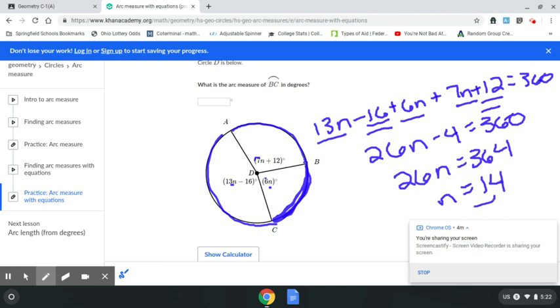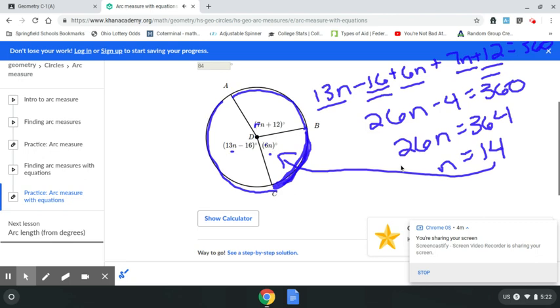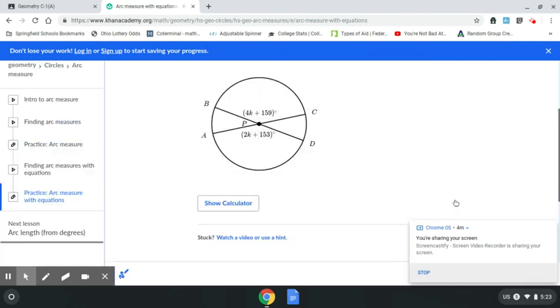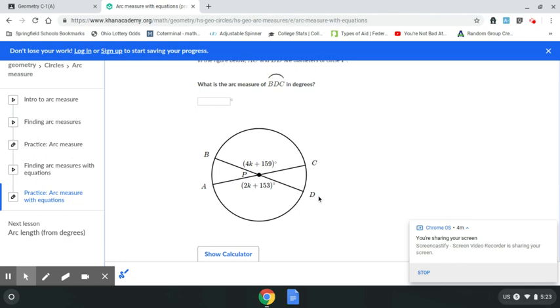They want me to find BC. So I take that 14 and plug it into here. 6 times 14 gets me an answer of 84. So I go to my box, 84. Got it. All right, 3 for 3. Last question for me. All right, take a look at these two. We're supposed to find the measure of arc BDC.